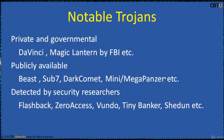Notable Trojans are classified as private and governmental. Examples include Darwincy, Magic Lantern, and FinFisher. Governmental Trojans are implemented in the nation's interest. Publicly available Trojans include Beast, Sub7, Dark Comet, Mini, and Megapanzer. Trojans detected by security researchers include FlashBack, ZeroAccess, TinyBanker, and Shedun.